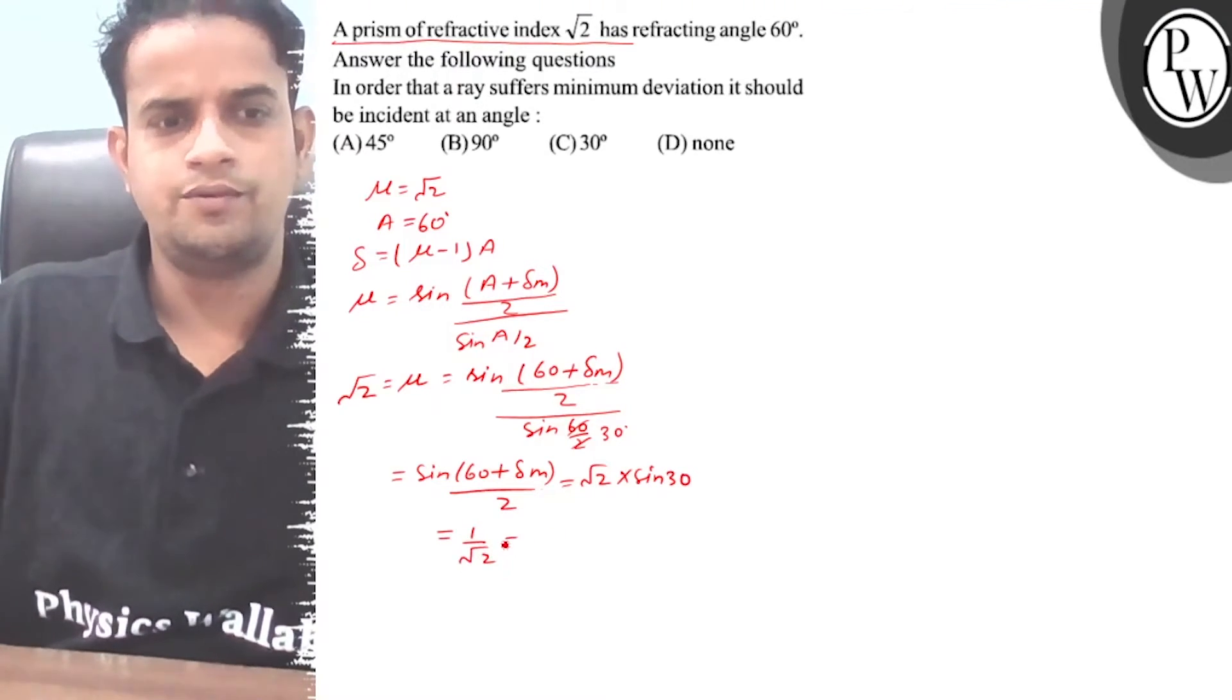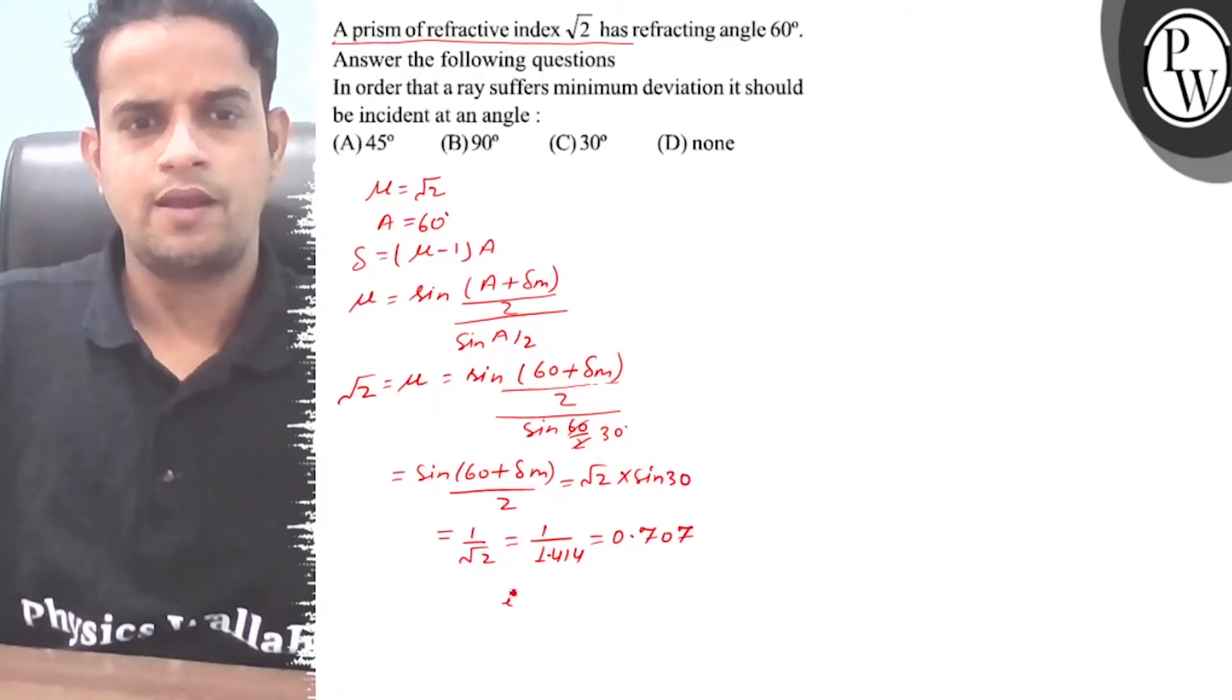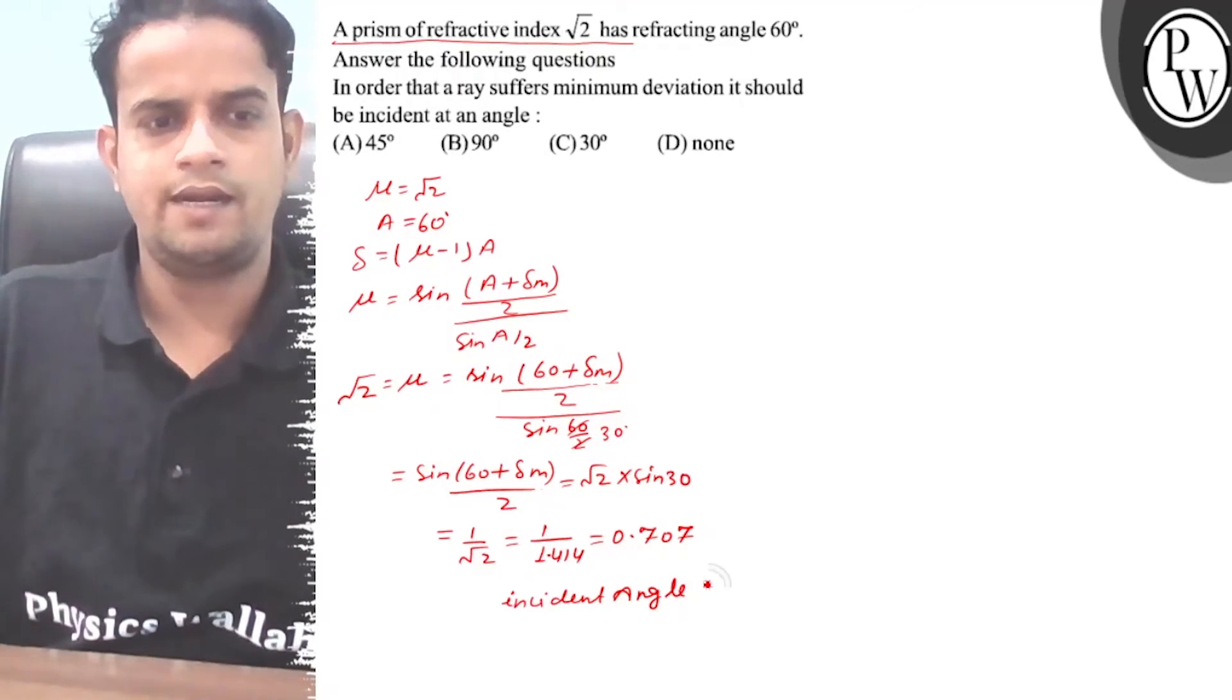In this situation, 1 divided by root 2 equals 1 divided by 1.414, which equals 0.707. The incident angle will be...